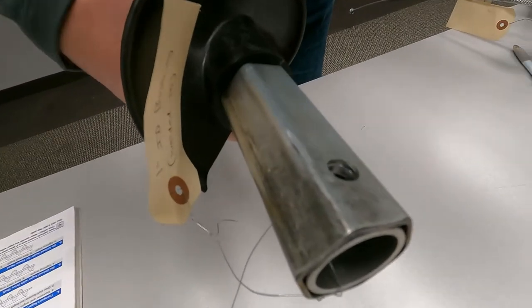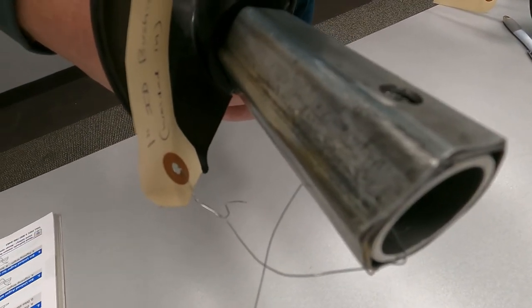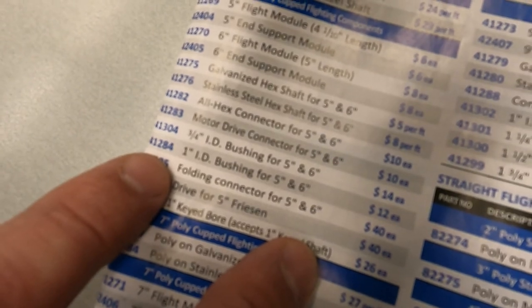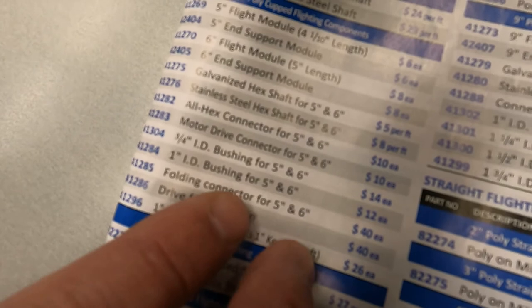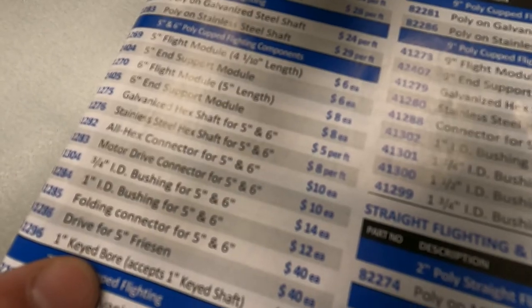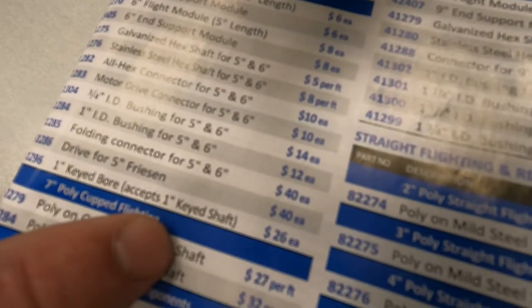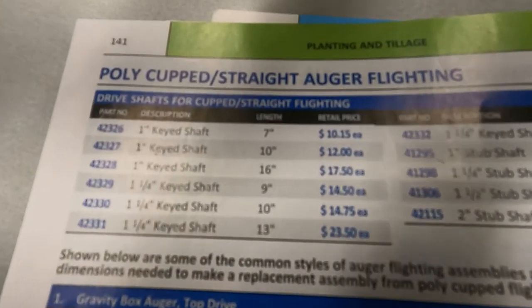If you need a shaft with a keyway in it, you will need to add the shaft to your order. Then, identifying your motor connector style, if your motor connector is a stub shaft, you will need to order a bushing that accepts the stub shaft. If your auger does not have a stub shaft, you will need to order a board bushing to accept a stub shaft. Next, determine what drive shaft you need.